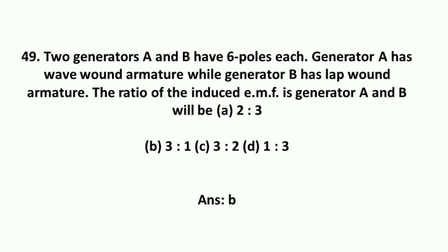Two generators A and B have 6 poles each. Generator A has wave-wound armature while generator B has lap-wound armature. The ratio of the induced EMF is generator A and B will be 3 is to 1.